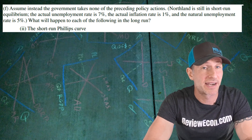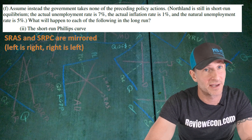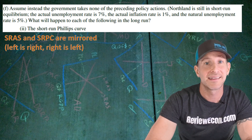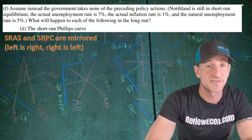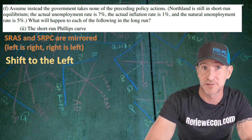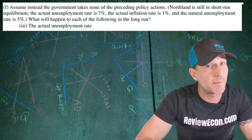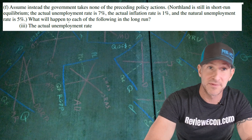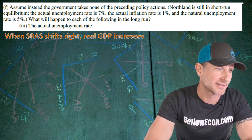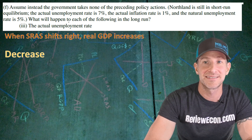We are also asked what the impact would be on the short-run Phillips curve if no government action is taken. The short-run aggregate supply curve and short-run Phillips curves are mirrored images of each other — left is right and right is left. Since we saw a rightward shift of the short-run aggregate supply curve, that means we're going to have a leftward shift of the short-run Phillips curve. Finally, for part F(iii), we are asked what would happen to the unemployment rate in the long run. The rightward shift of the SRAS curve causes real GDP to increase, and when real output increases, unemployment decreases.